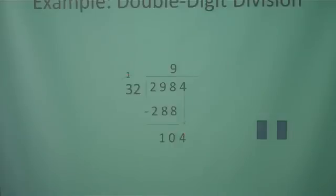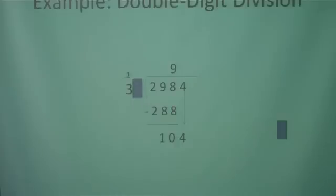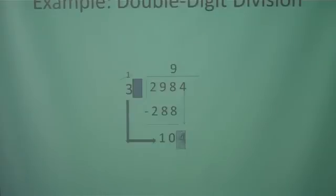Now we need to find out how many times 32 can go into 104. We're going to use our cover technique again — cover the 2, cover the 4, and ask how many times can 3 go into 10 without going over. That would be a 3.